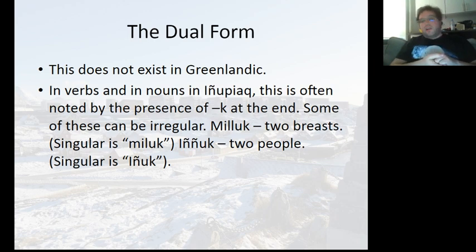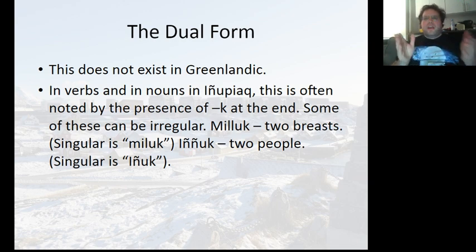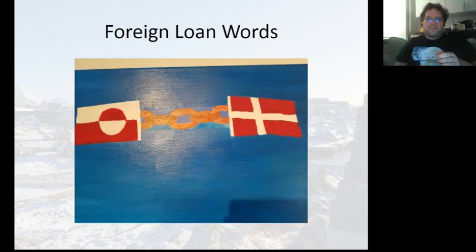The dual form does not exist in Greenlandic, but in verbs and nouns in Inupiaq it's noted by the presence of K at the end. Some of these can be irregular. While Milluk refers to one breast, Milluuk refers to two breasts. And Inuk — which was also the reason Americans pronounced the word Inuit, because of Alaska — that would be Inuuk, referring to two people. The dual form is not entirely exclusive to verbs in Inupiaq, and that's very important to note.